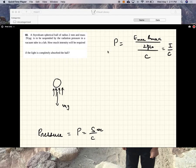Now, force equals pressure times area and that should equal mg. So I over C times pi R squared equals M times G.